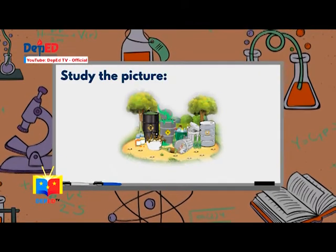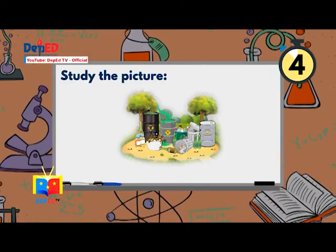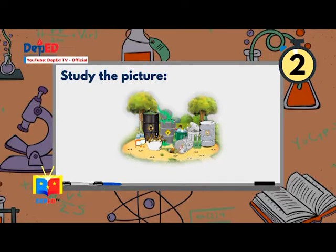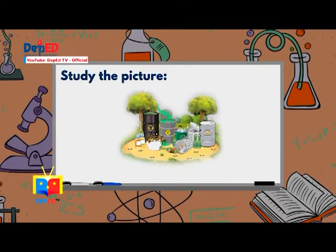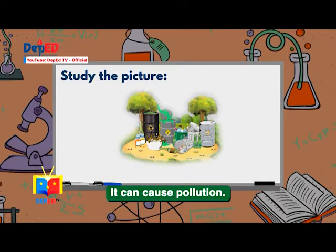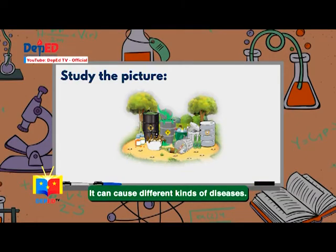Study the second picture on the screen. What do you see in the picture? Correct! It is a picture of different chemicals dumped or improperly thrown in a place. How do these chemicals affect our environment? That's right — it can cause pollution. How can pollution affect us? Correct! It can cause different kinds of diseases.